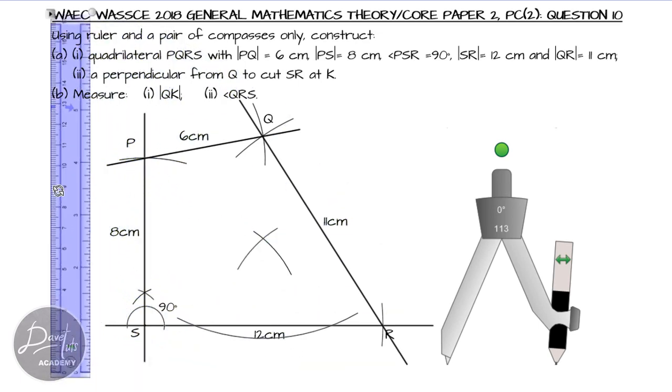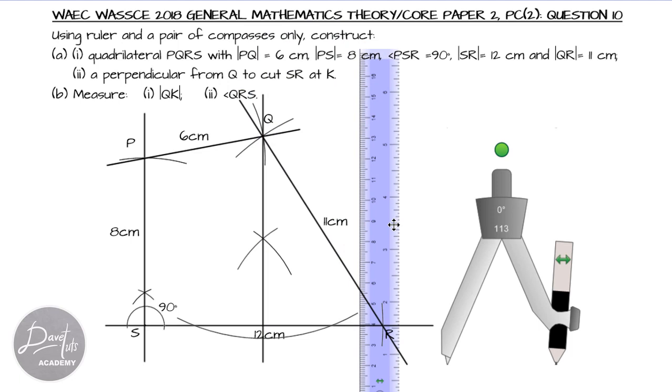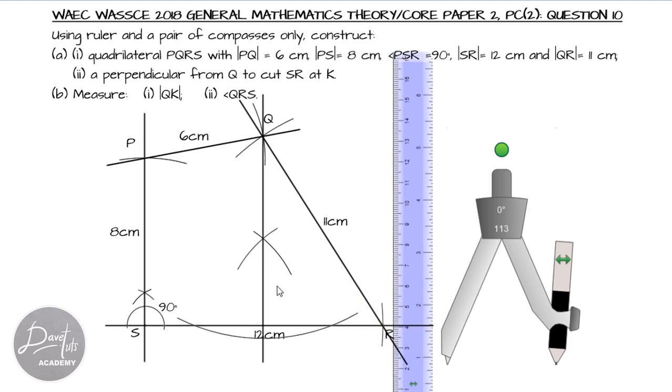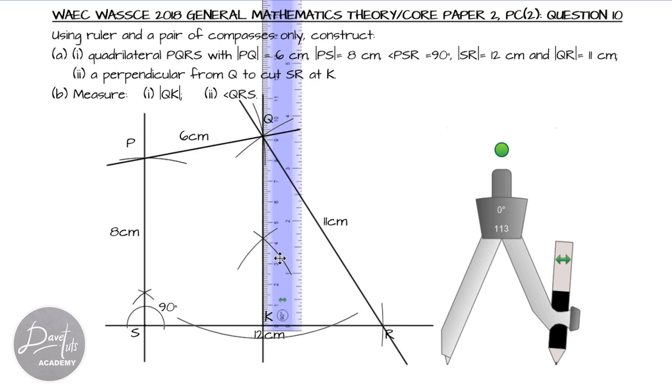Okay, now, this intersection of the two arcs and point Q, if I join them with a straight line, that will be a perpendicular to the line SR. So, bringing in my ruler from Q to line SR, I can draw a straight line, and that straight line is a perpendicular from Q to cut SR at the point K. So with that, our construction is quite done. All we need to do now is to measure QK, and with our ruler, we can notice that, okay, from K down up to Q, we have 1, 2, 3, 4, 5, 6, 7, 8, 9.